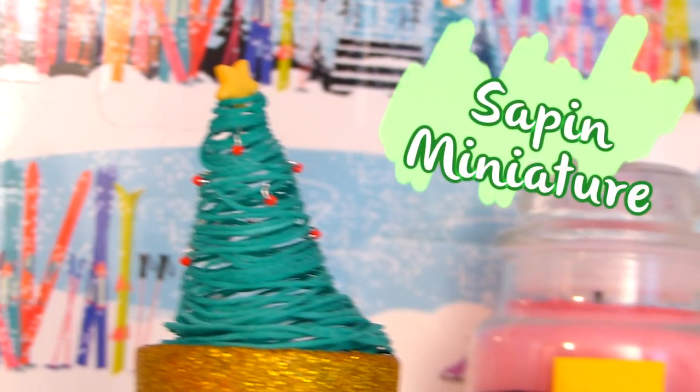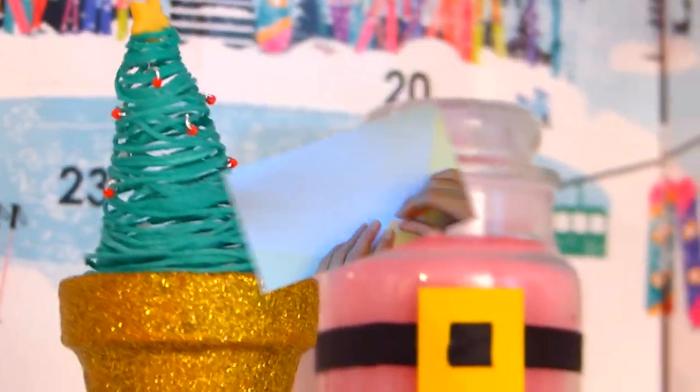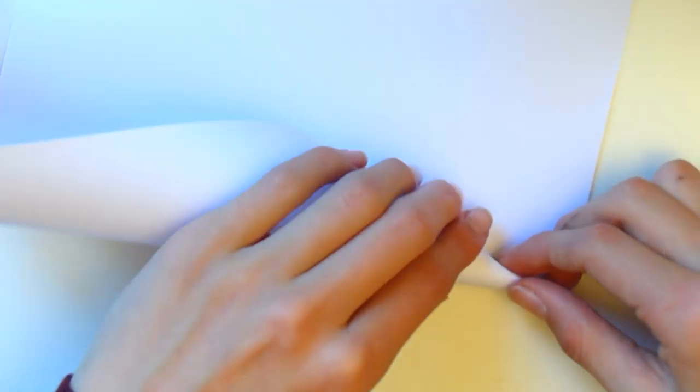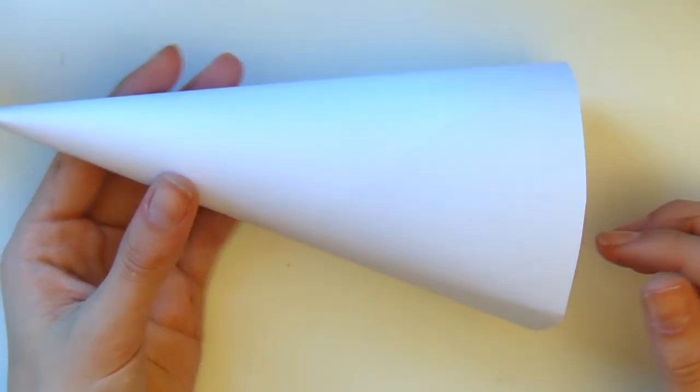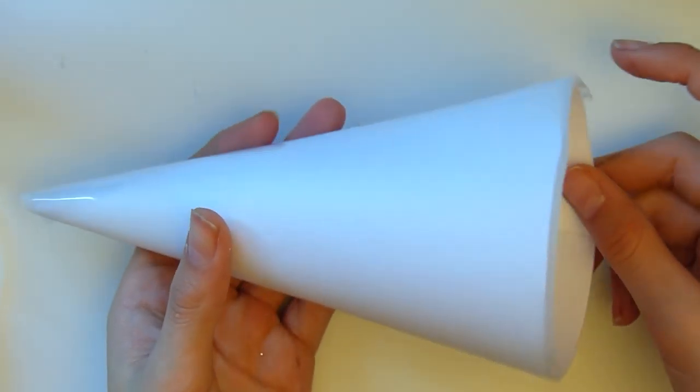On arrive au dernier DIY qui sera pour réaliser un petit sapin miniature. On va commencer par prendre une feuille blanche et rouler un cône à l'aide de celle-ci. On va découper la base avec notre ciseau pour que ça tienne debout et que ce soit bien droit. On fixe notre cône avec du scotch et on va le recouvrir de papier cuisson afin que la colle n'adhère pas au papier et qu'on puisse décoller notre petit sapin.